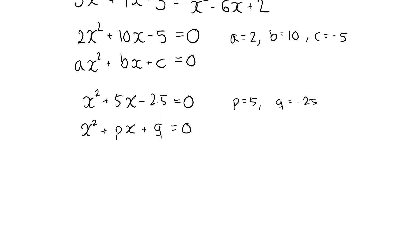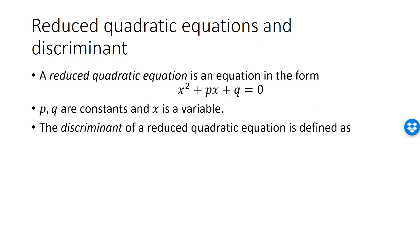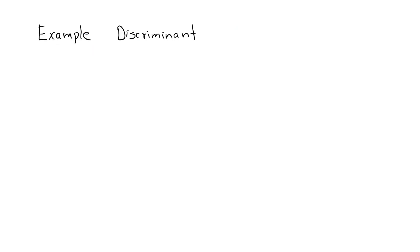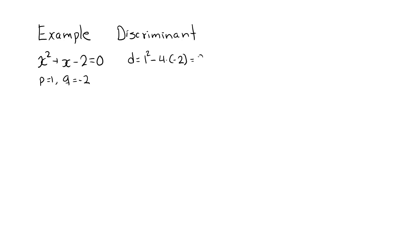Let's begin by introducing the term discriminant. For a reduced quadratic equation, the discriminant d is defined as p squared minus 4q. For example, in the equation x squared plus x minus 2 equals 0, we have p equal to 1 and q equal to minus 2. Thus d is equal to 1 squared minus 4 times minus 2, which is 9.